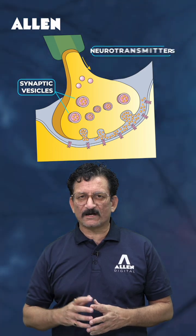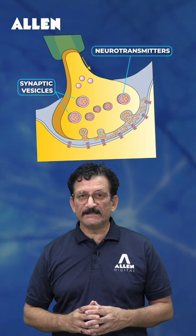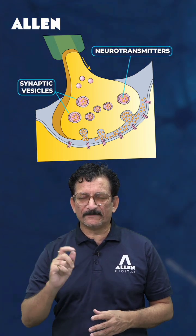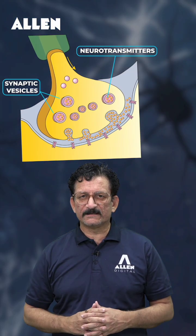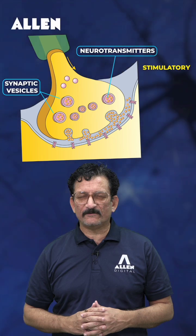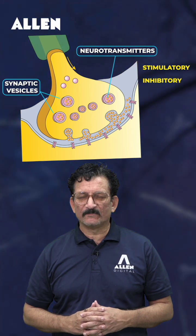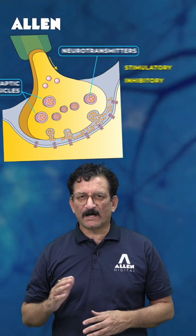The synaptic knob consists of synaptic vesicles, which are filled with neurotransmitters. These neurotransmitters are of two types: one is stimulatory and the second one is inhibitory.